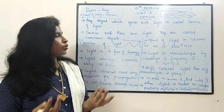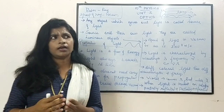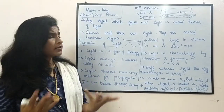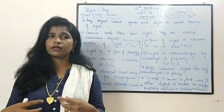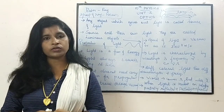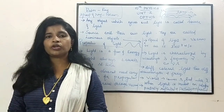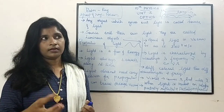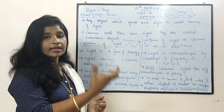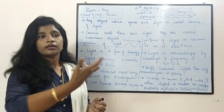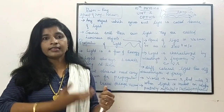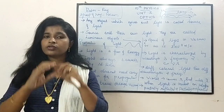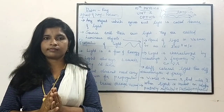Now, you might have studied about light — there are natural sources and artificial sources. Any object from which light originates, we call that the source of light. Any object which gives out the light is called as source of light.